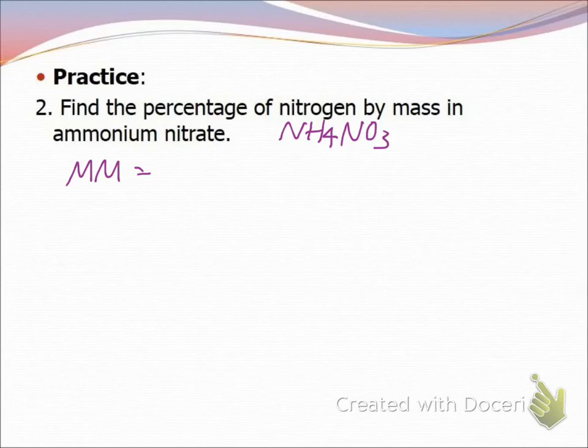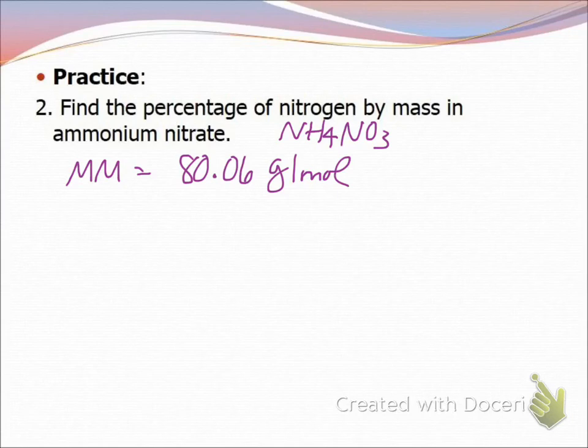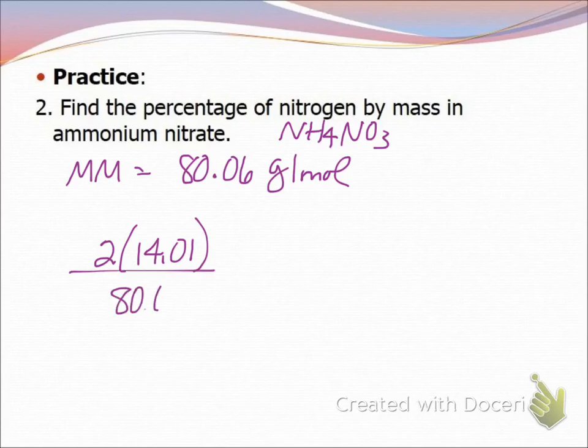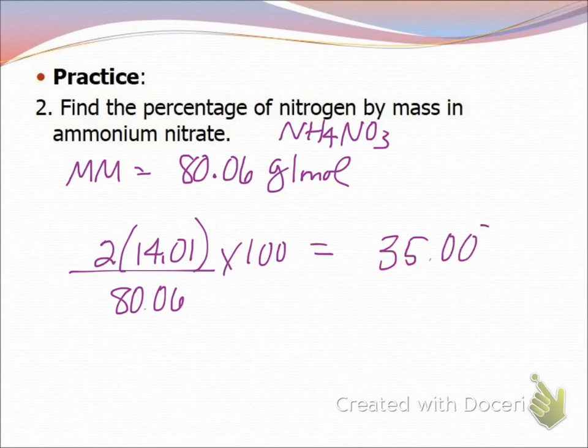First thing I need to do is get the molar mass of the entire compound. So I have 2 nitrogen: 14.01 times 2 plus 4 times 1.01 plus 3 times 16, and we get 80.06. Now we just want nitrogen, so we do 2 times 14.01 over 80.06 times 100. We should get 35.00% nitrogen. So in that compound of ammonium nitrate, 35% of the mass is coming from the nitrogen.